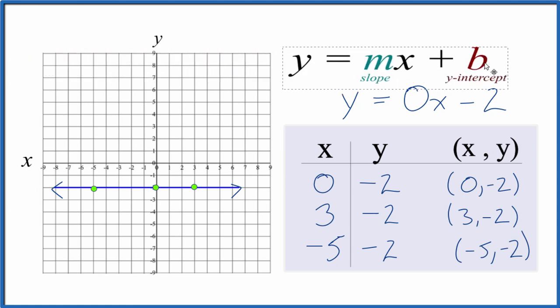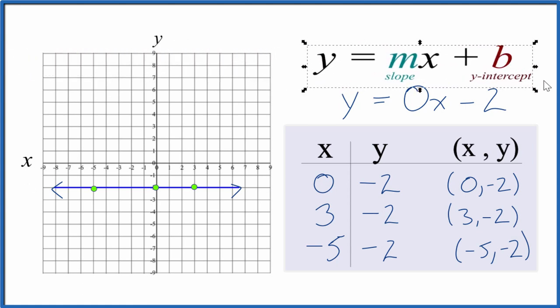If you think about this in slope-intercept form here, we have y equals mx plus b. b, that's the negative 2, that's the y-intercept. And then for the slope, since we have 0, we don't have a slope. It's just this horizontal line. So that's another way to think about this equation, y equals negative 2.